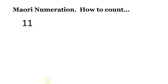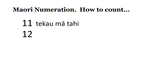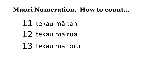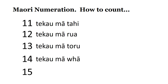Let's try that again. Say the number in English, and you try and say the number in Māori before I say it. Number 11: te kau mā tahi. Number 12: te kau mā rua. Number 13: te kau mā toru. Number 14: te kau mā whā. Number 15: te kau mā rima.